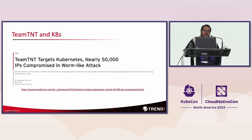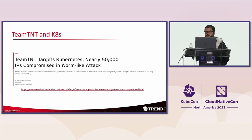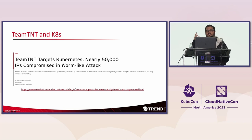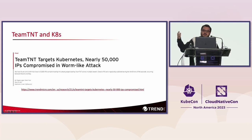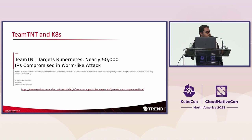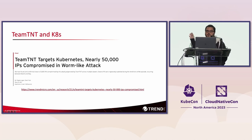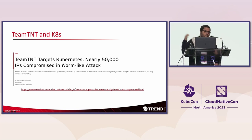This is Team TNT — a threat actor group based out of Europe, probably Germany from what we were able to identify. They were leveraging different techniques and abusing the Kubelet API to execute commands inside containers and, at the end, mining cryptocurrencies. From our honeypots, we've seen that most attacks in containerized and Kubernetes environments have a goal of resource hijacking — which basically means cryptocurrency mining. This attack was carried out after they got internal access to the victim's network, either on-premises or in the cloud.